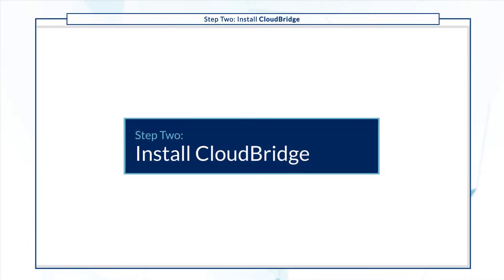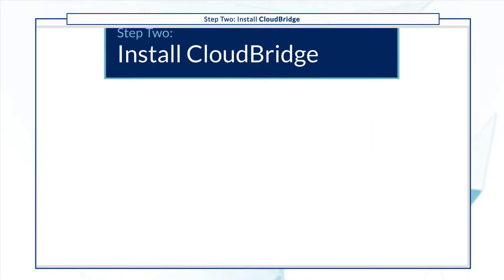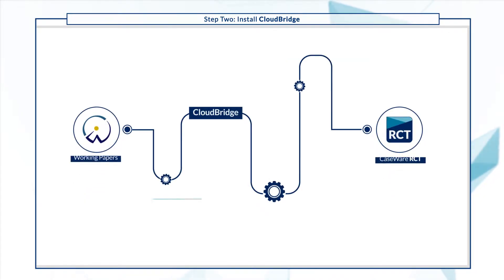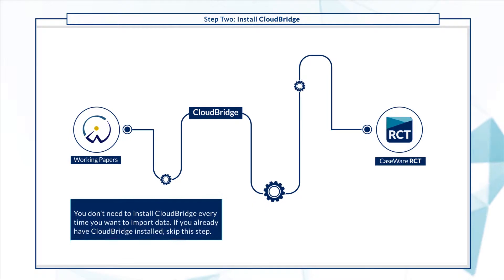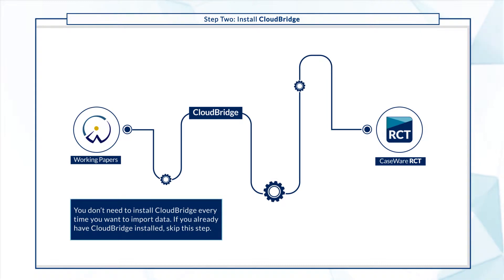Next, install CloudBridge. This is a utility that enables you to transfer data from Working Papers to RCT. Note that you don't need to install CloudBridge every time you want to import data. If you already have it installed, skip this step.